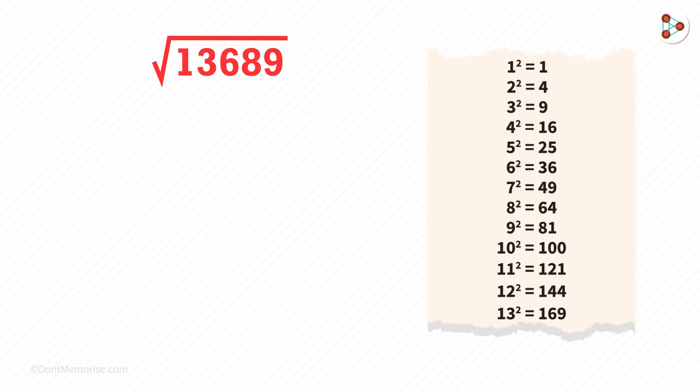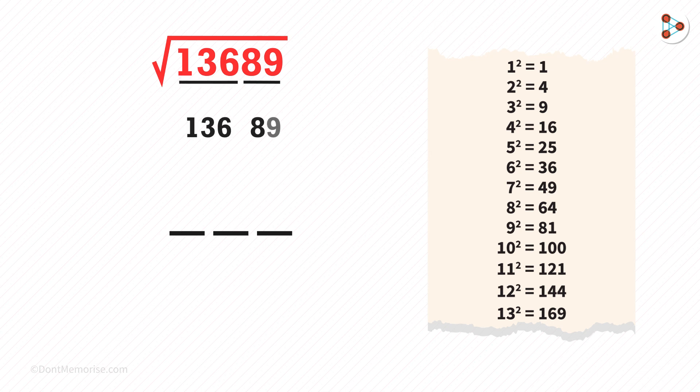Always remember that the square root of any 5 digit perfect square will always be 3 digits long. Let us do the grouping. First, we take two digits from the right and then we look at the remaining ones. So here we have two groups: 136 and 89.